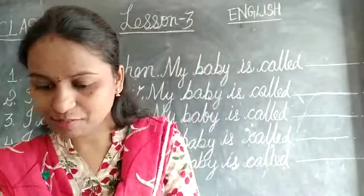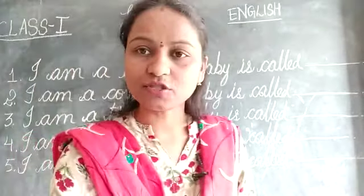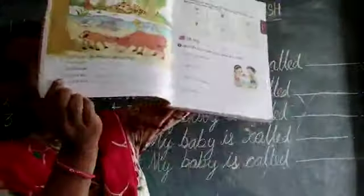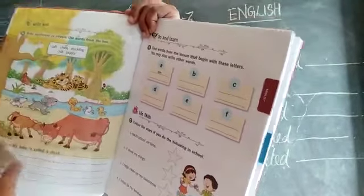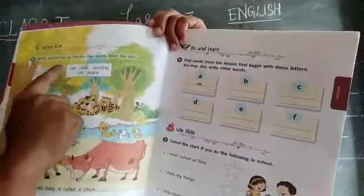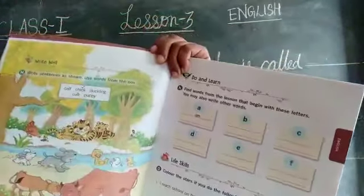Next page — page number 32. Open page number 32, children. Here you can see clearly. So there is a forest. Write well — write sentences as shown. Use words from the box: yes.